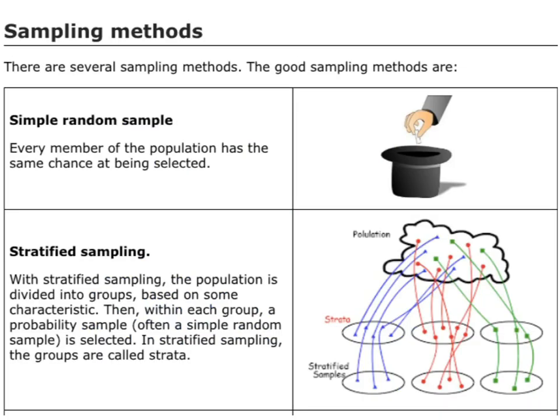In terms of sampling methods, there are some good methods. Simple random sample, and that's literally like I've got in the picture there, where you're just drawing a name out of the hat. So it's just completely random. Every person could get selected.